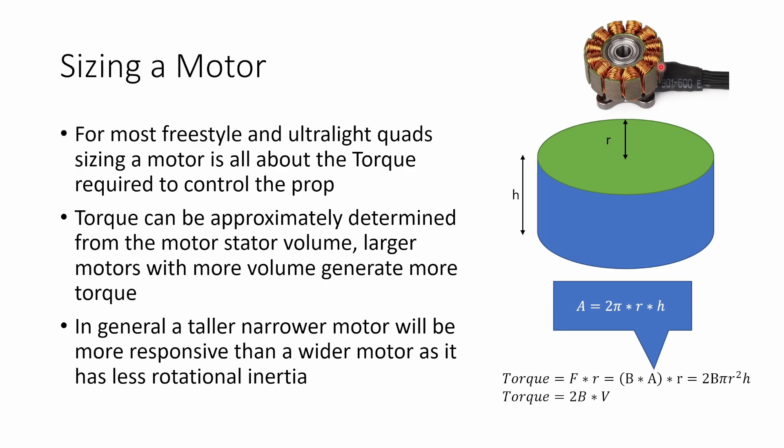The force can be determined by the magnetic field strength B times the area over which that field acts. In an outrunner motor, the area over which the magnetic field acts is this curved blue area, the curved outside area here. That area is 2π times the radius of the stator times the height of the stator. That gives us our force, and we multiply that by the distance over which it acts, which is again the radius of the stator. That gives us 2Bπr²h. Now πr²h is interesting because πr²h is also the volume of this cylinder, the stator volume. So another way that we can write the torque of the motor is twice the magnetic field strength times the volume of the stator.